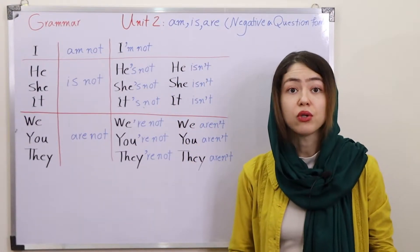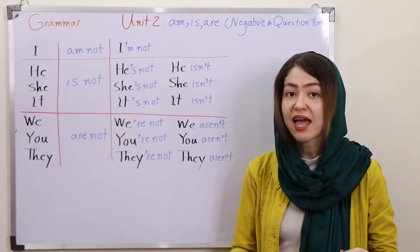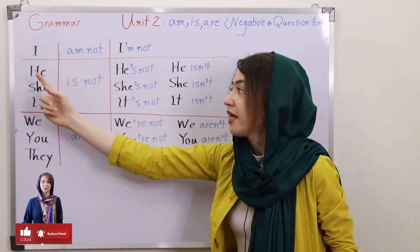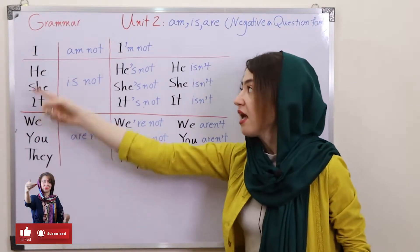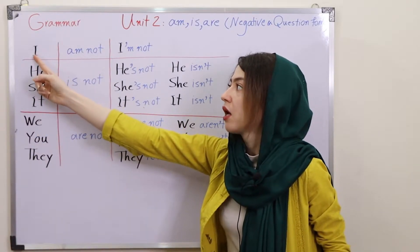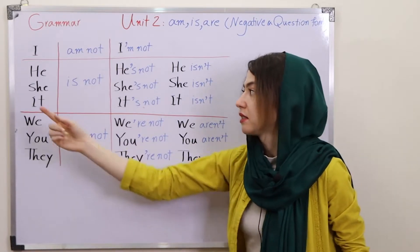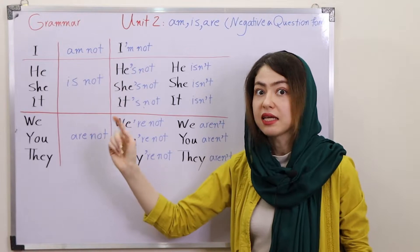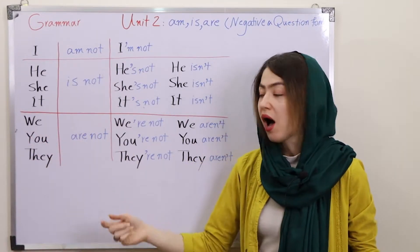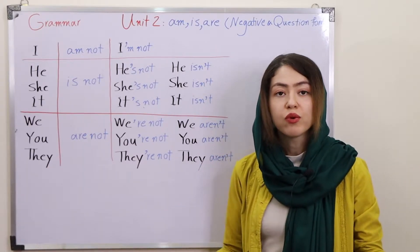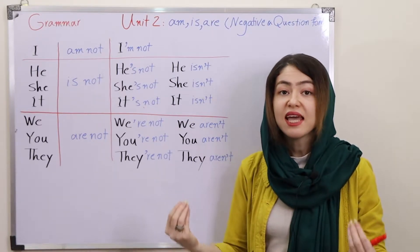Hi everyone, welcome to the grammar series. This is our second session — you can find the first session here. Today we are going to work on 'am,' 'is,' and 'are,' but this time we are going to work on the question and negative forms. These are called to-be verbs. In the previous session we worked on subject pronouns: I, he, she, it, we, you, they, and the affirmative sentences.